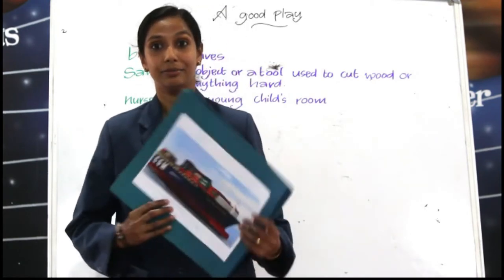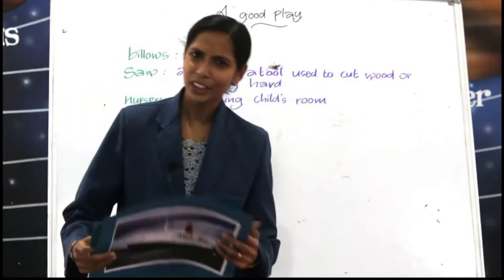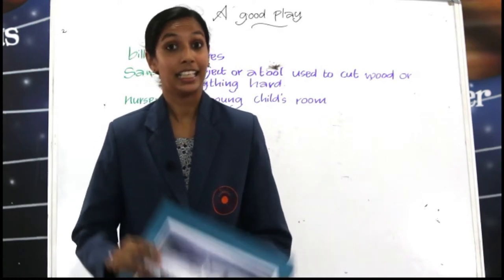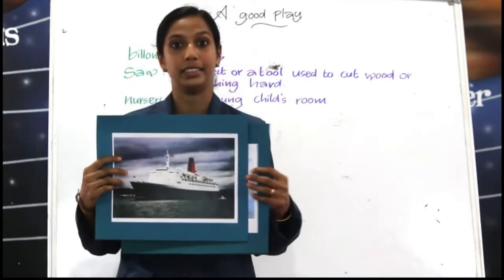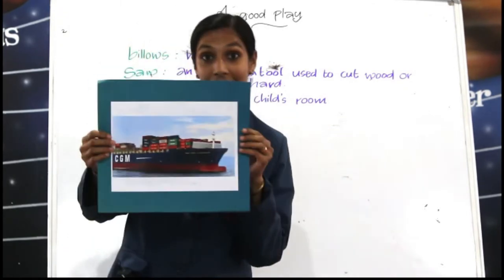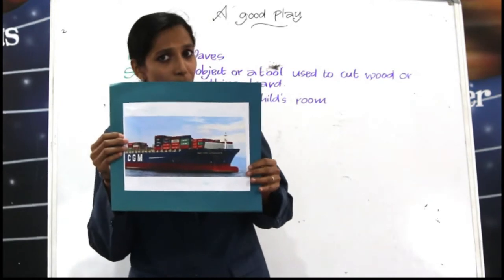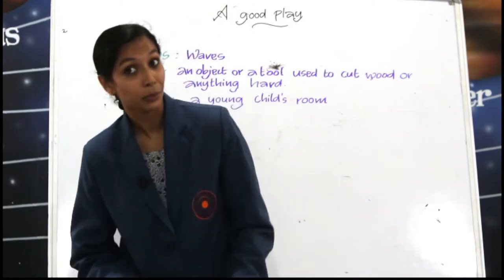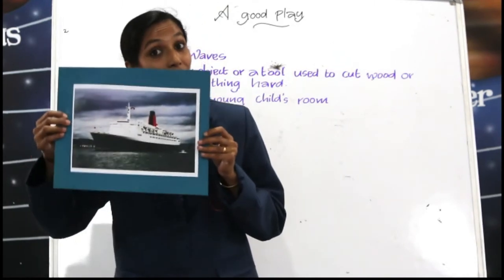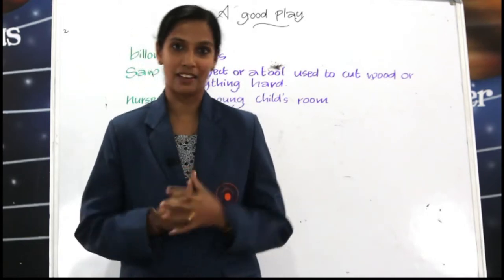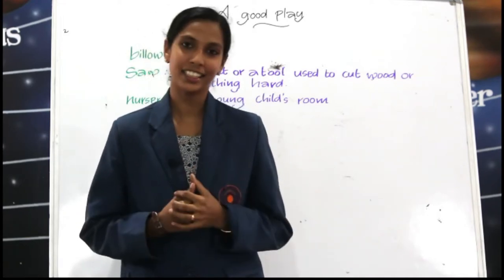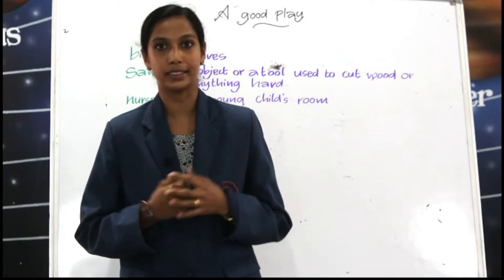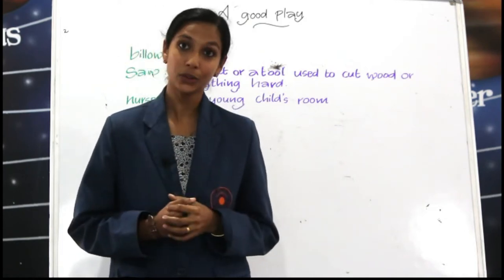I have two ships here. Have you ever noticed any difference between these two ships? Yes, these two ships are for different purposes. This is a cargo ship. Do you know about a cargo ship? A cargo ship is used for business purposes, such as transporting goods. This is a passenger ship used for pleasure travel, and it has facilities such as a restaurant, swimming pool, gym and clubs, and it takes passengers to different places.